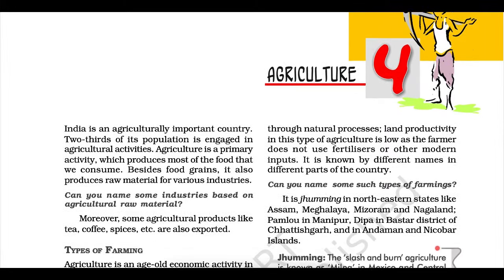Types of farming. Agriculture is an age-old economic activity in our country. Over these years, cultivation methods have changed significantly depending upon the characteristics of physical environment, technological know-how, and socio-cultural practices. Farming varies from subsistence to commercial type. At present, in different parts of India, the following farming systems are practiced.